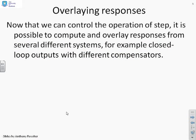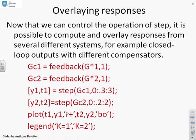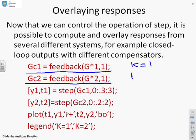OK. To finish off now, what if I want to overlay some responses? So we know we can control the operation of step. We can say what times we want things calculated. But what if we want to compare different systems? An obvious example would be if we wanted to compare closed loop outputs with different compensators. So we could decide which compensator was best. So we've got a little bit of code here. So you can see how that might be done. So first of all, you'll see the first line. GC1 equals feedback(G*1,1). That's a bit like doing a feedback loop with a compensator of 1. Because I've done G times 1. GC2 equals feedback(G*2,1). And that's a bit like doing a compensator with K equals 2.